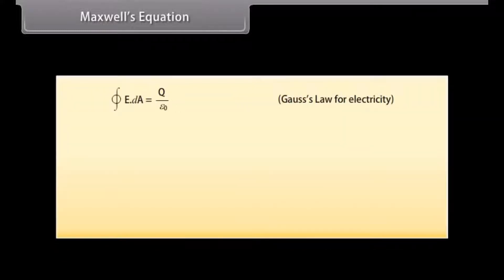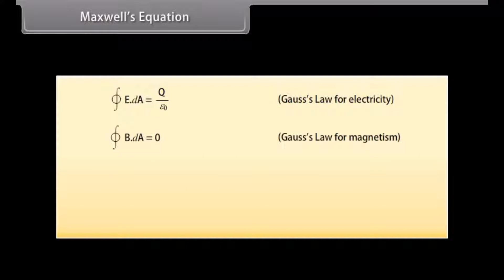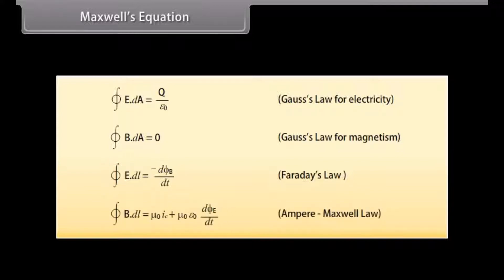Equations in electromagnetism: Gauss's law for electricity — closed integral of E dot dA equals Q by epsilon naught. Gauss's law for magnetism — closed integral of B dot dA equals 0. Faraday's law — closed integral of E dot dL equals minus d(phi_B)/dt. Ampere-Maxwell law — closed integral of B dot dL equals mu naught I_C plus mu naught epsilon naught times d(phi_E)/dt.